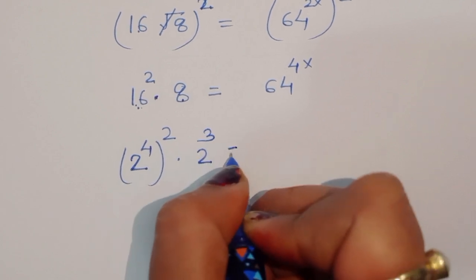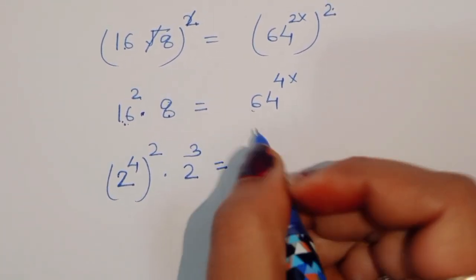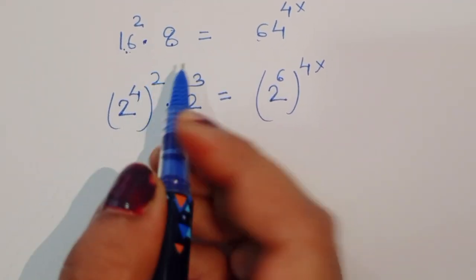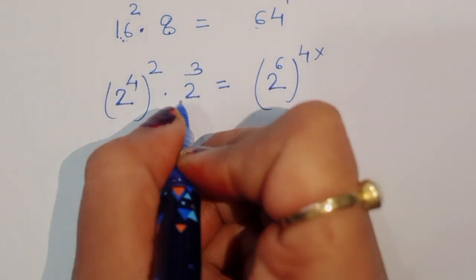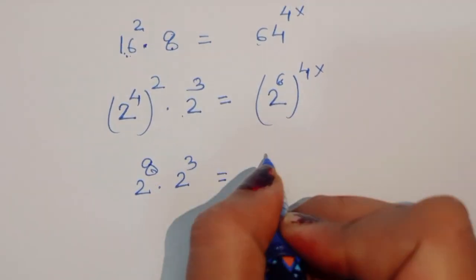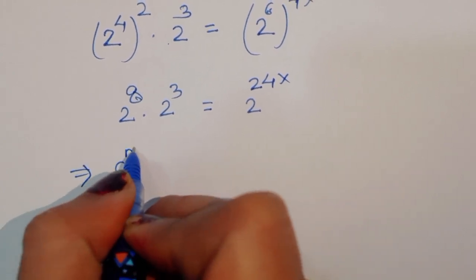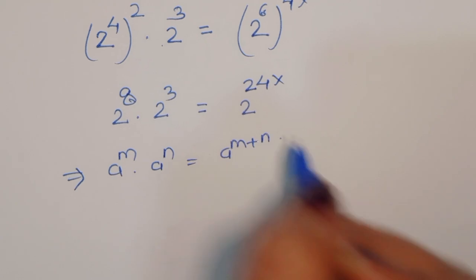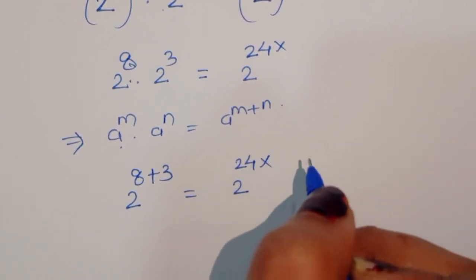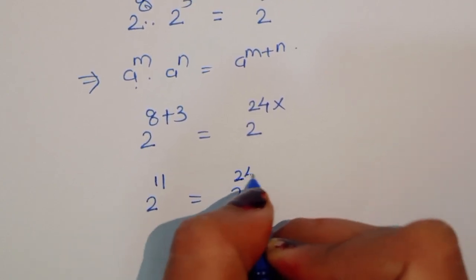We convert 64 in terms of base 2: 64 = 2^6. So the equation becomes 2^8 × 2^3 = (2^6)^(4x) = 2^(24x). Using the formula a^m × a^n = a^(m+n), the left side is 2^(8+3) = 2^11 = 2^(24x).